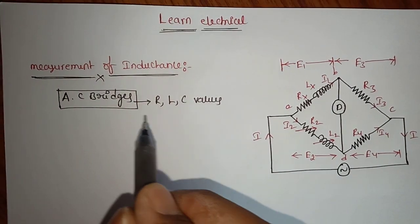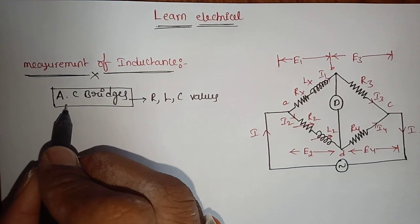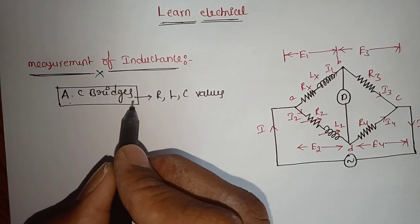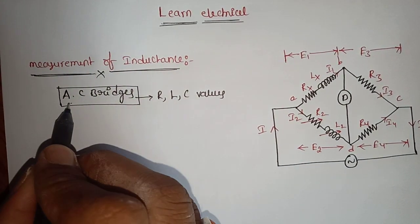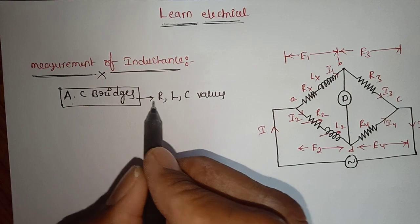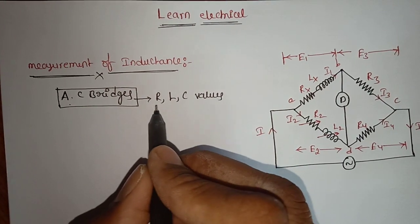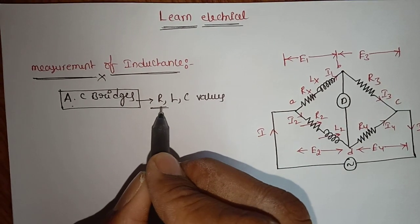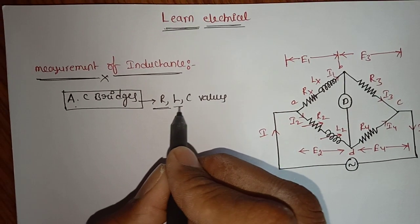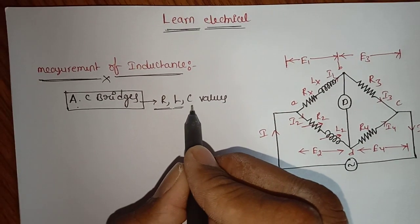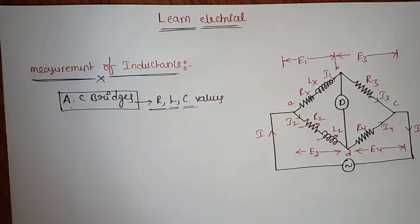Good afternoon students. Now we will discuss about AC bridges. These AC bridges are used to measure unknown values of resistance, inductance, and capacitance.